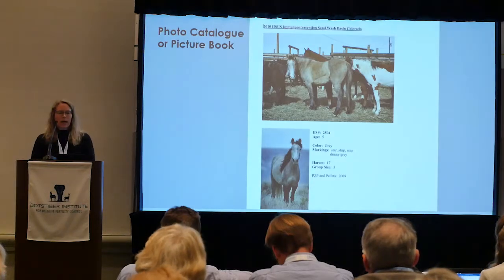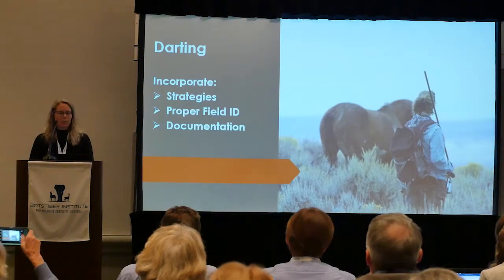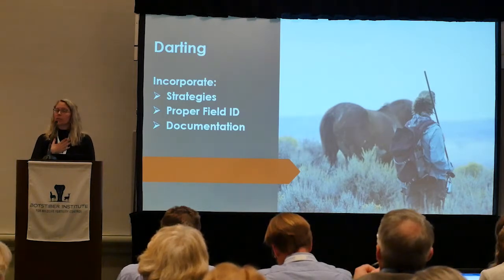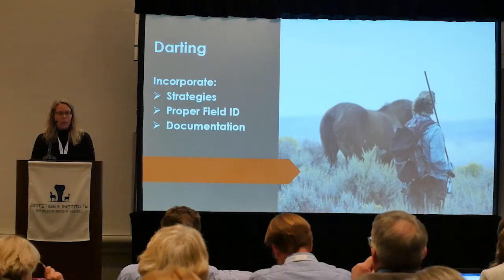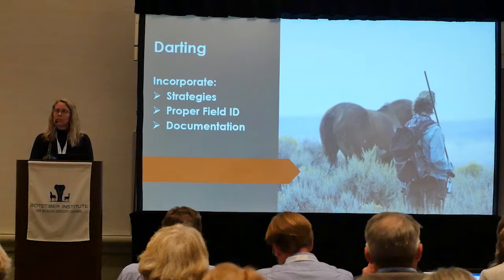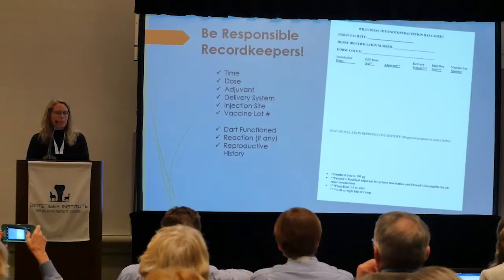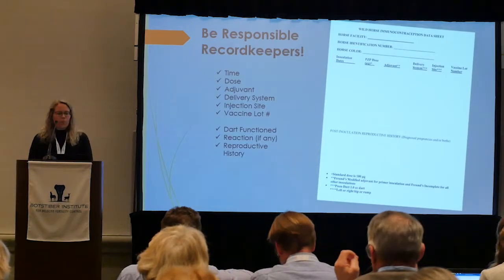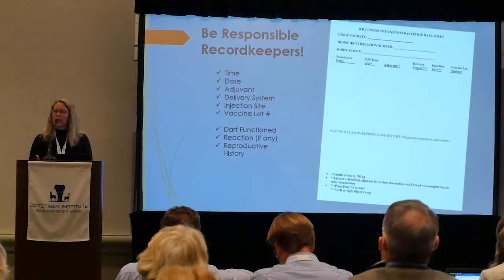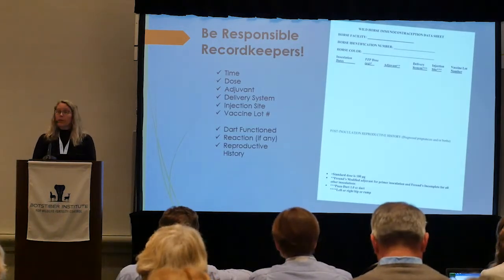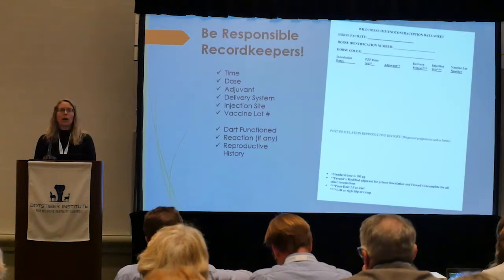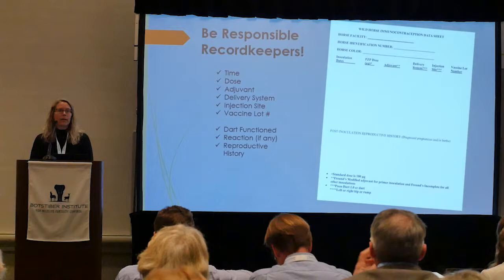After you've identified horses, we can go on to darting if we have our contraceptive program in place. Have proper field identification so you know who you're out there darting. Document, document, document — be responsible record keepers. Basically, put everything down about the darting event: time, dose, what adjuvant — this is for PZP — delivery system, injection site, vaccine number, lot number, whether the dart functioned, any reactions, and if there's a reproductive history. You may not know all of the horse's reproductive history, but if you do, that's definitely a benefit.